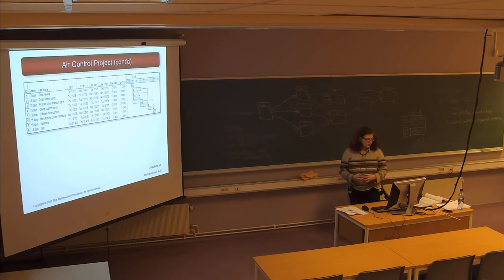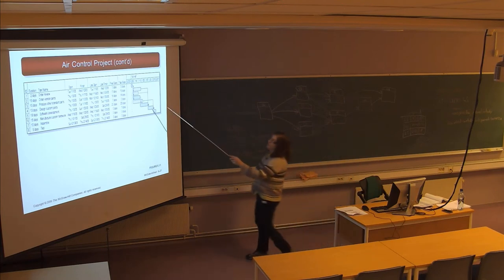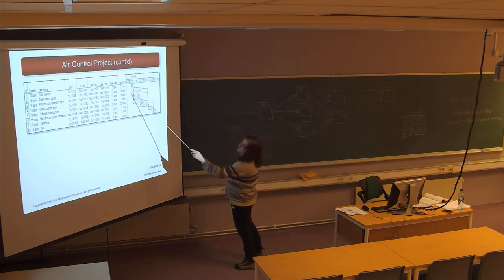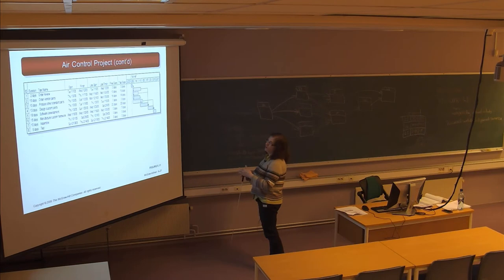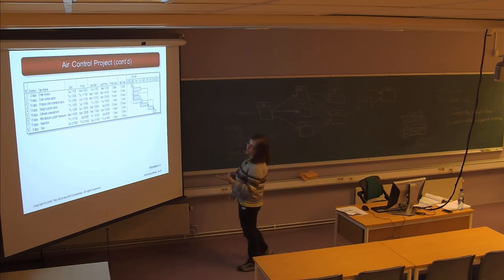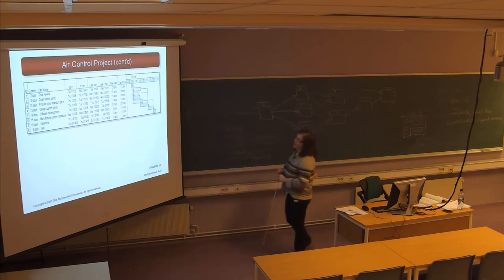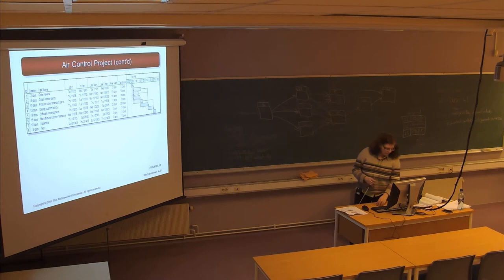A Gantt chart shows visually the amount of time each activity takes, with late start and late finish dates. You can mark the target time when you want to start and finish, and also record when you actually start and finish during the project. Different colors can indicate what has actually happened versus what is planned — it's a good tool to ensure you're on schedule.